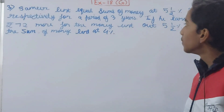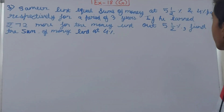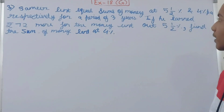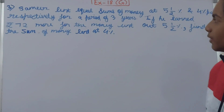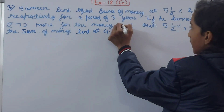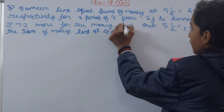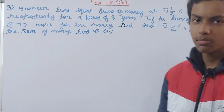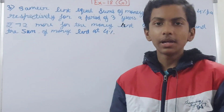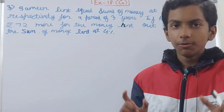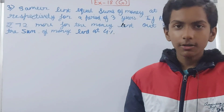The question says: Samir lent equal sums of money at 5½% and 4% respectively for a period of three years. If he earned ₹72 more for the money lent out at 5½%, find the sum of money lent out at 4%.